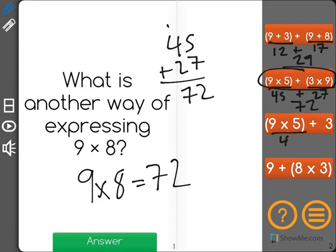9 times 5 is 45, plus 3 is 48. That's not right. Remember, this one wasn't right.